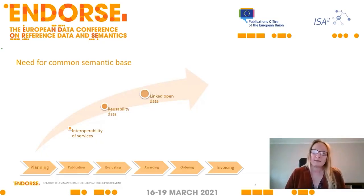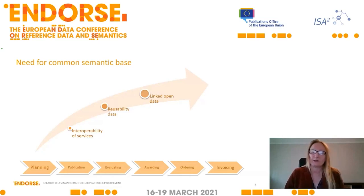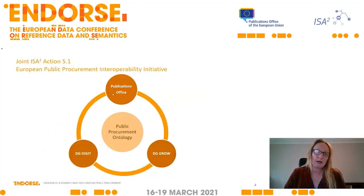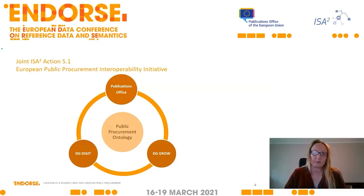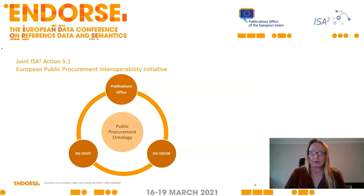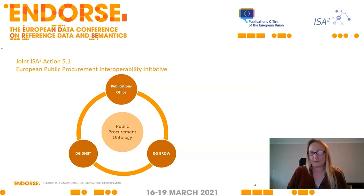It also means that you can reuse the data. Once you've used the data once in your system — for example in the notices — you can use the same information in ordering without having to retype everything, such as the address of a buyer or seller. Once you have this common semantic base of terms and create relationships between all the terms and concepts, you can start moving towards linked open data. Within ISA², there was an action 5.1 about the European public procurement interoperability initiative, broadly made up of the Publications Office, DG Grow, and DIGIT.